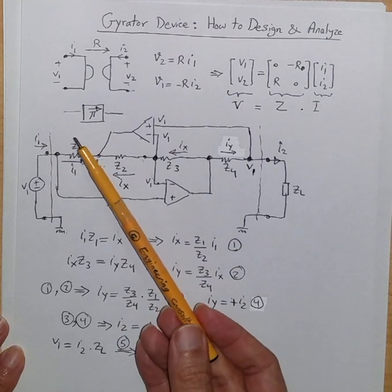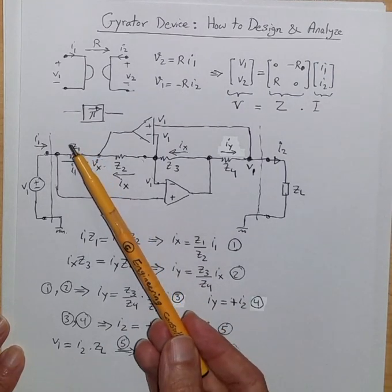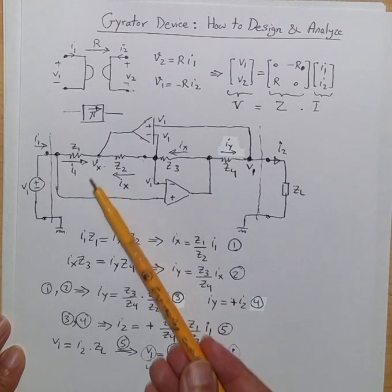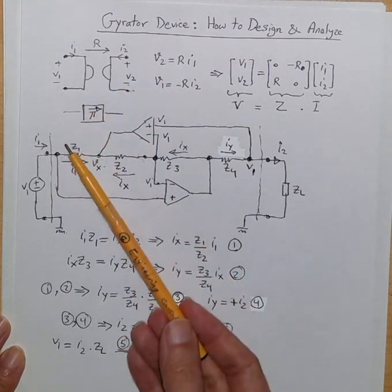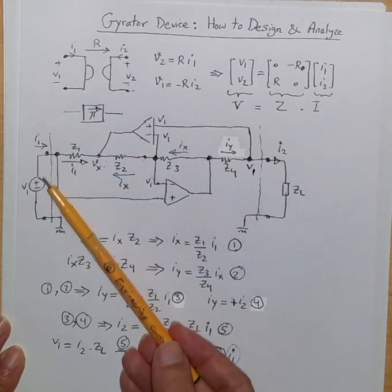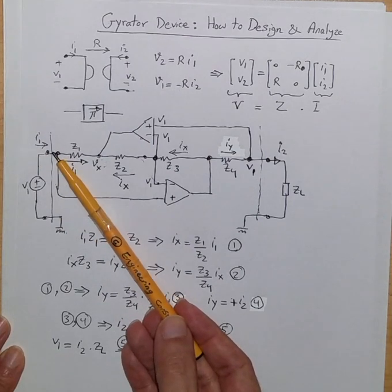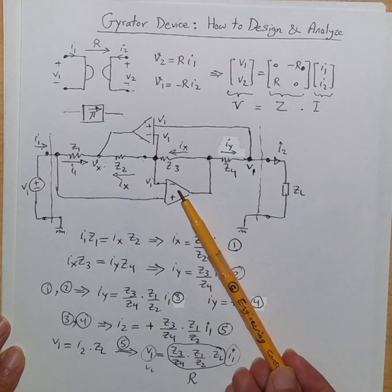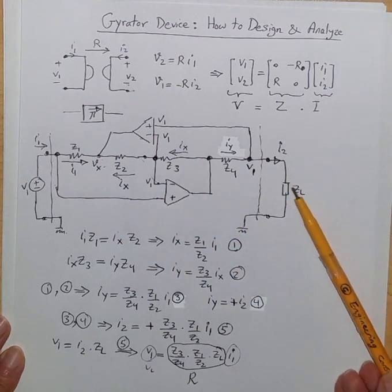Having said that, one of the good ways to realize a gyrator is using two op-amps like this. So imagine you have your two port with port one here, the current I1 going through it. This is inside the two port device using two op-amps and this is the second port.